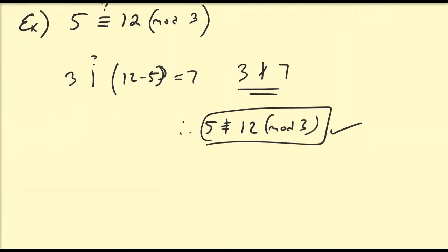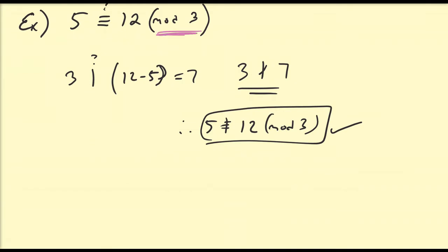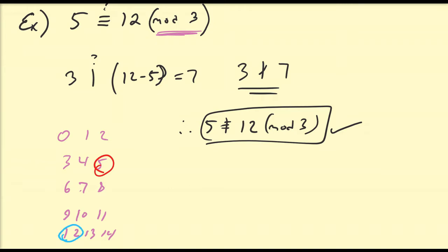An alternative way of doing this type of problem: since we're working in modulo 3, we can create three columns — 0, 1, 2, then 3, 4, 5, then 6, 7, 8, then 9, 10, 11, then 12, 13, 14, and so on. If we locate 5 and we locate 12, an equivalent way of asking this question is: do 5 and 12 fall into the same exact column? The answer is no. From here we can also see that 5 is congruent to many other numbers — for example, 5 is congruent to 2, 8 is congruent to 14, 0 is congruent to 9, and 10 is congruent to 4. You can come up with many equivalence relations by choosing any two numbers in a particular column, and this also allows us to solve equations.